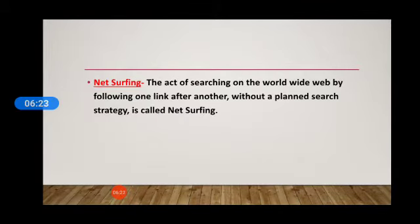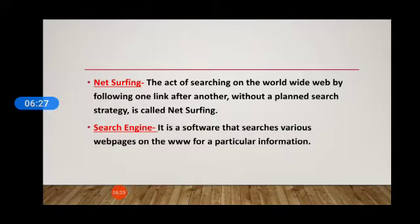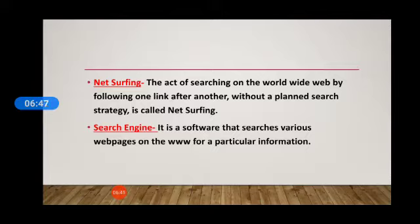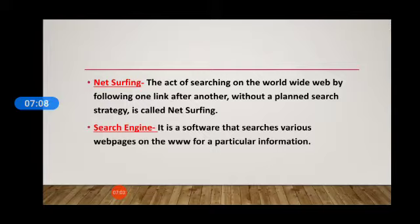Some more terms we use for the internet: net surfing — the act of searching on the World Wide Web by following one link after another without a planned search strategy is called net surfing. Next term is search engine. A search engine is a software that searches various web pages on the WWW for particular information. It is a web-based tool that enables users to locate information on the World Wide Web. Popular examples of search engines are Google, Yahoo, etc.